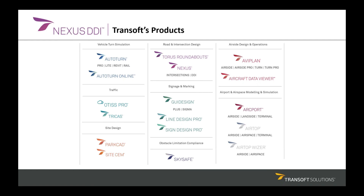We try to translate those challenges to language understandable by software developers. Regarding our products, we have three different categories. The first is simulation, which includes the AutoTurn family — most of you are familiar with this product. The second is civil and transportation design products, which includes Taurus Roundabouts, Nexus Intersection, and Nexus DDI, which I'm going to talk about today. We also have aviation products.